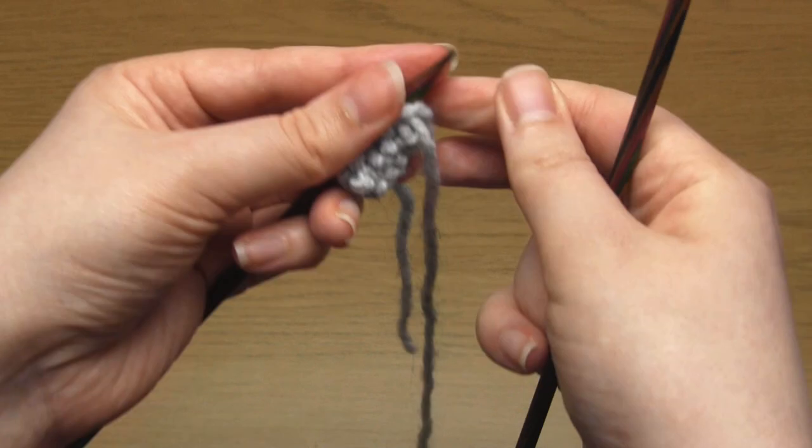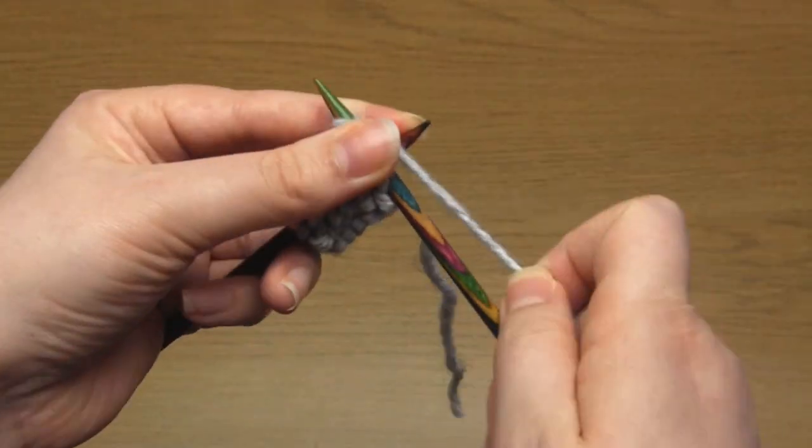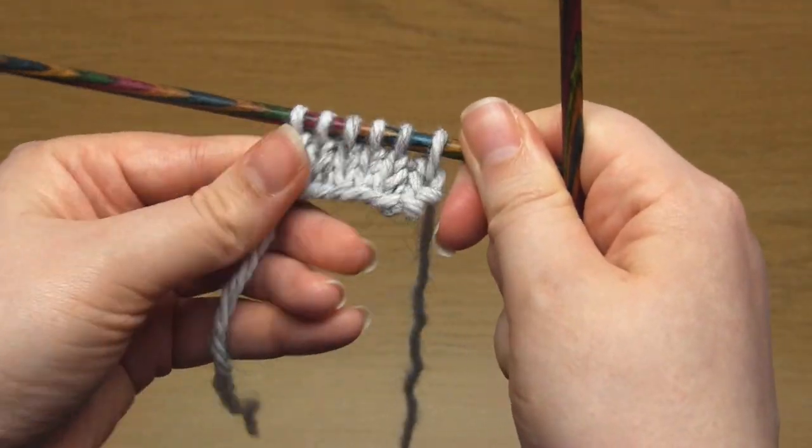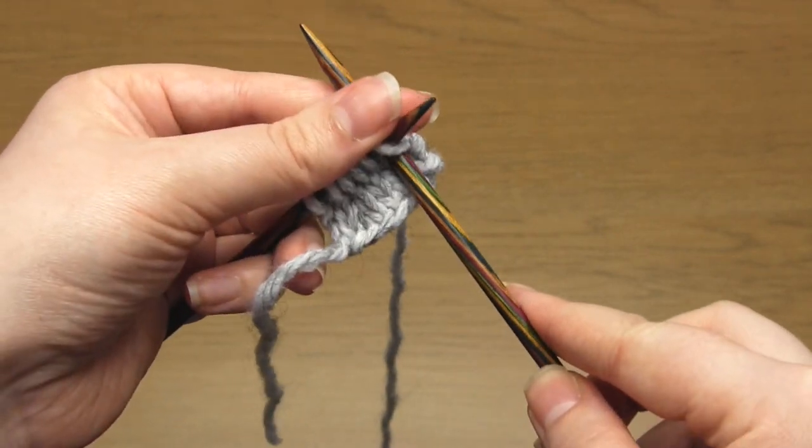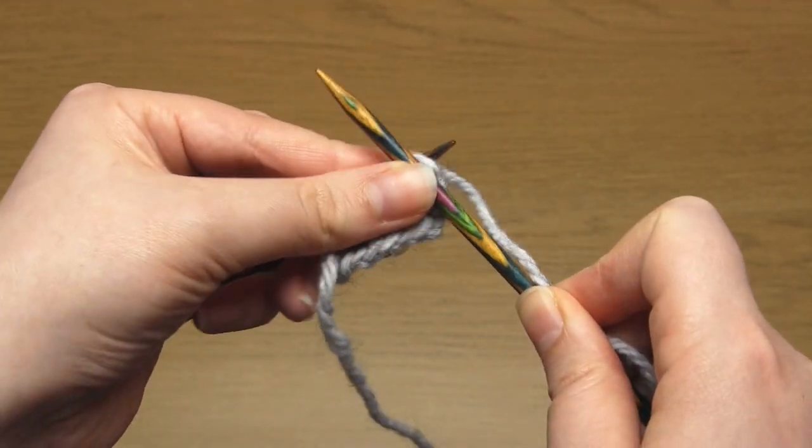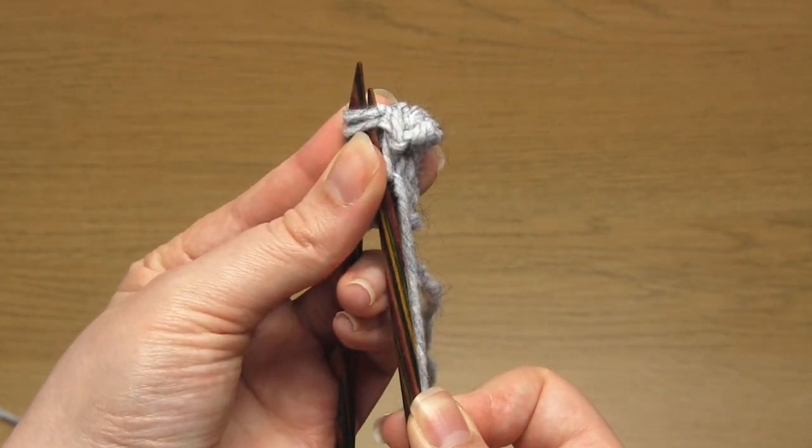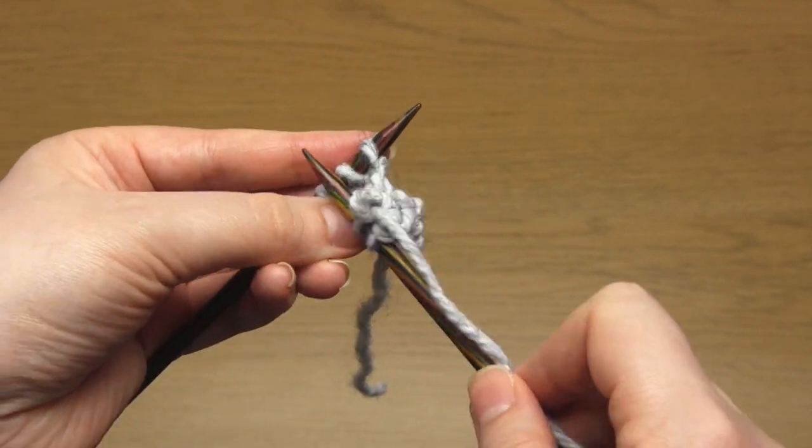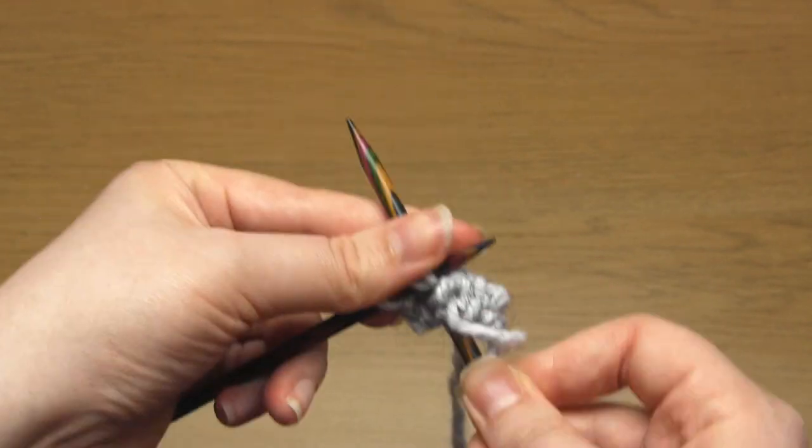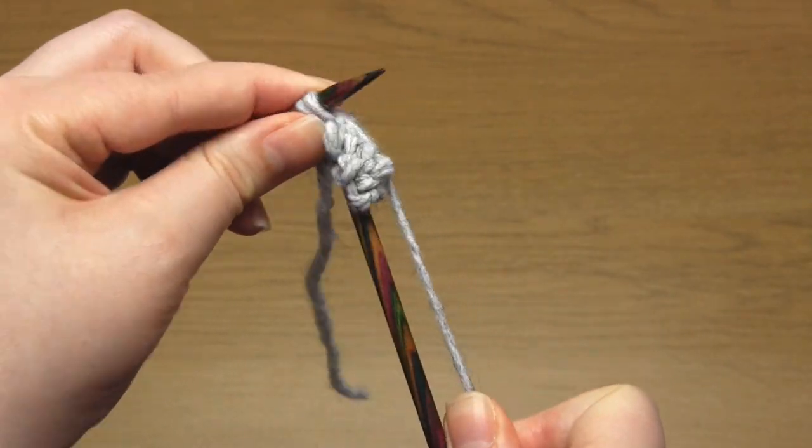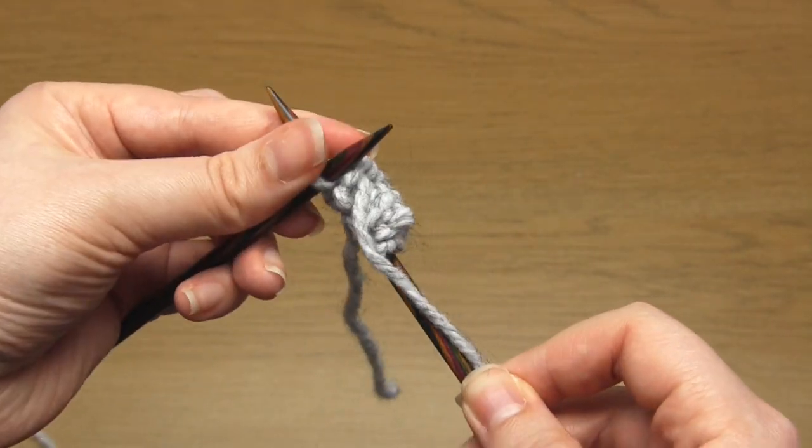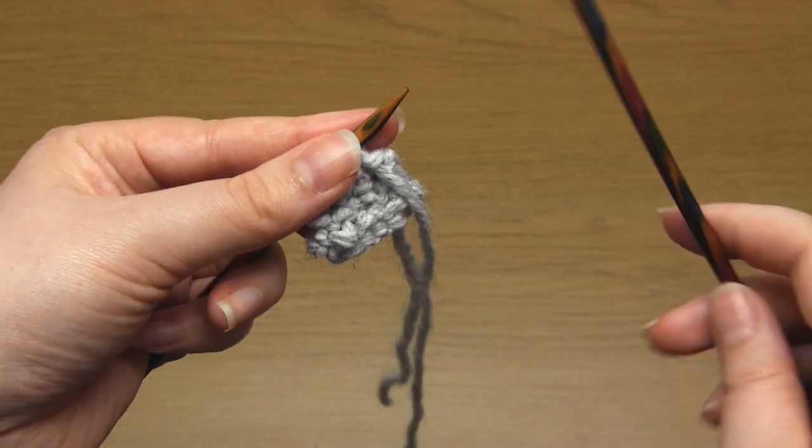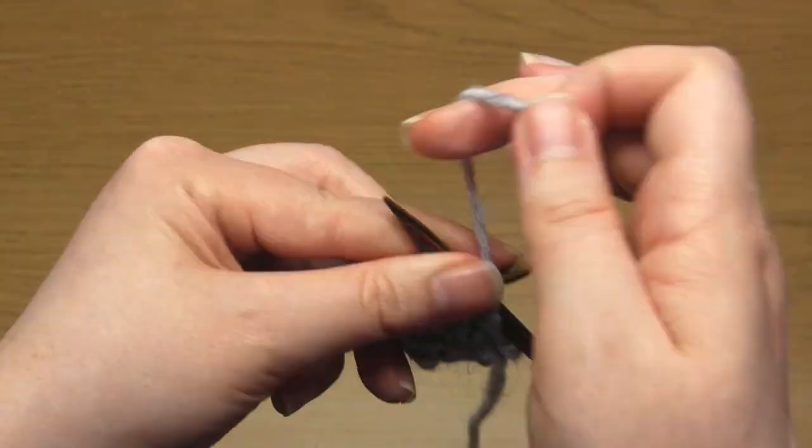Then for row 3 you just purl across the row. So that's purl 6. And for row 4 you begin by knitting a stitch. Then do a k2tog. So that's knit 2 together. Then another k2tog. And finish the row by knitting a stitch. Then for row 5 you purl across the row. So that's purl 4.